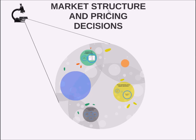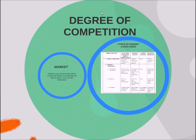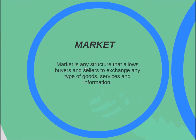What is a market structure? To understand this, first let's see what is a market. A market is any structure that allows buyers and sellers to exchange any types of goods, services and information. It is a set of buyers and sellers and a commodity. Buyers are willing to buy, sellers are willing to sell, and there is a price of a commodity depending upon the number of sellers and number of buyers.